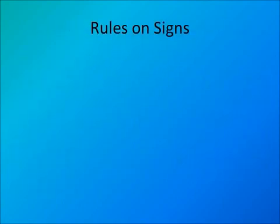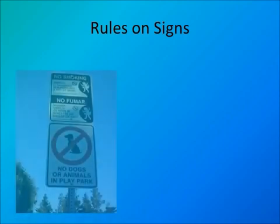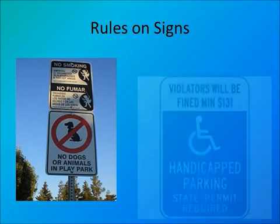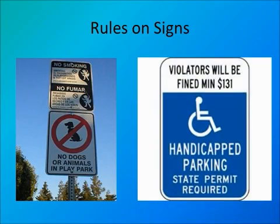Rules on signs are also an example of formal social sanctions. Signs such as 'no smoking' and 'no dogs or animals in the play park' prohibit smoking or animals playing in the park. The handicap parking sign prohibits people without a handicap parking sticker from parking in that spot, or they will be fined a minimum of $131.